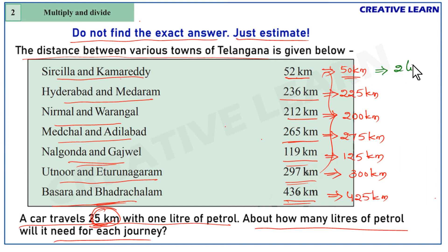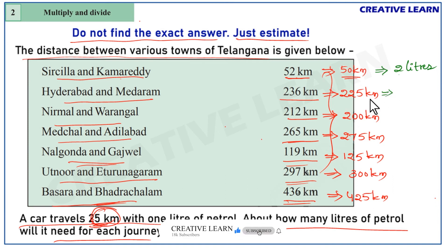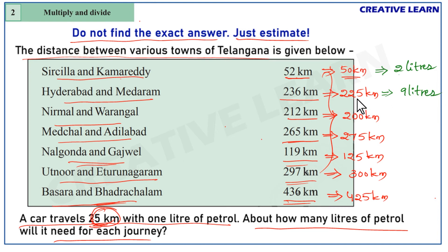50 divided by 25 gives 2 liters of petrol for Sirisilla to Kamareddy. Next, Hyderabad to Medaram: 225 kilometers means 25 nines are 225, so 9 liters of petrol. We can verify: for 100 kilometers it is 4 liters, for 200 kilometers it is 8 liters, and 225 kilometers means 9 liters.